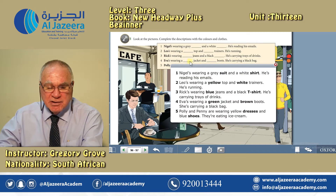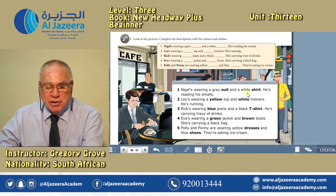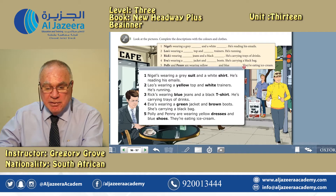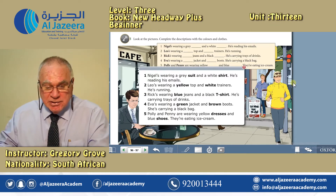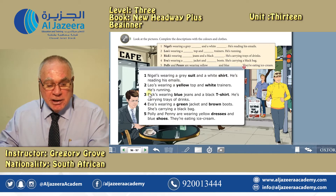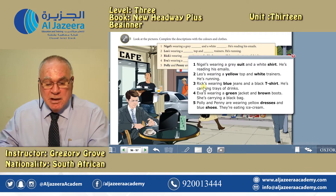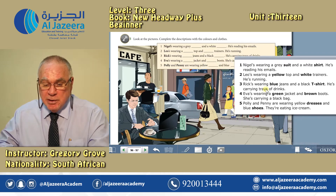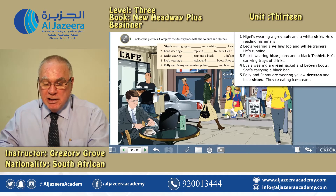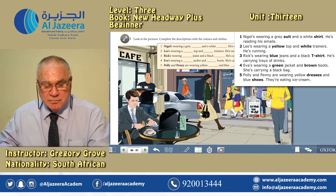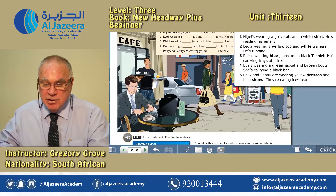Let's have a look at the answers. Nigel's wearing a grey suit and a white shirt — he's reading his emails. Leo is wearing a yellow top and white trainers — he's running. Rick is wearing blue jeans and a black t-shirt — he's carrying trays of drinks. Eva is wearing a green jacket and brown boots — she's carrying a black bag. And Polly and Penny are wearing yellow dresses and blue shoes — they are eating ice cream. Did you get all of those? If you did, very well done.